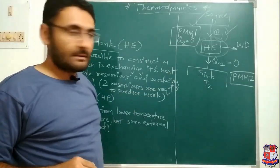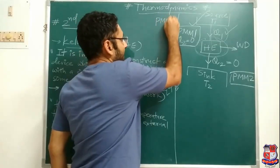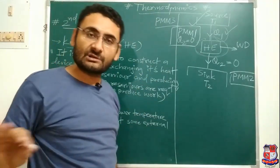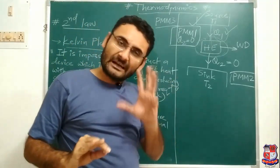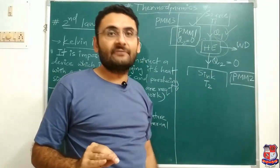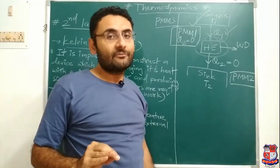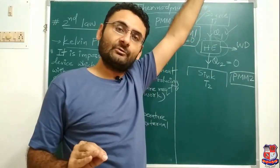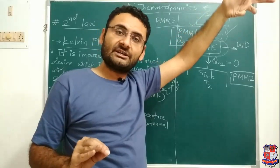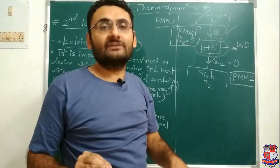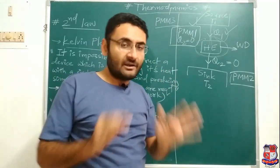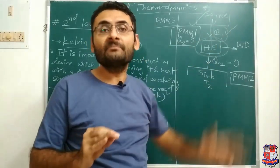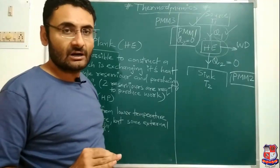We have talked about PMM1 and PMM2. We will also cover PMM3. PMM3 means: a rotating device keeps rotating up to infinite distance in the absence of any frictional force. That is not possible either, because in reality friction forces are always present — air friction exists — and so no body can travel an infinite distance. That is why PMM3 is also not possible.